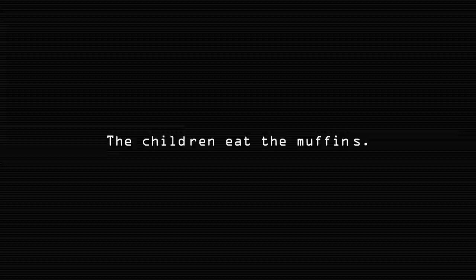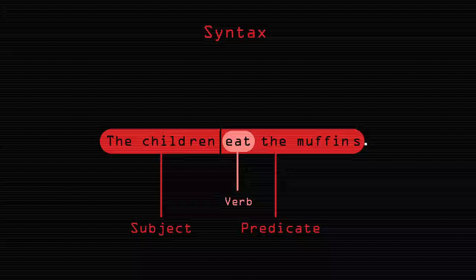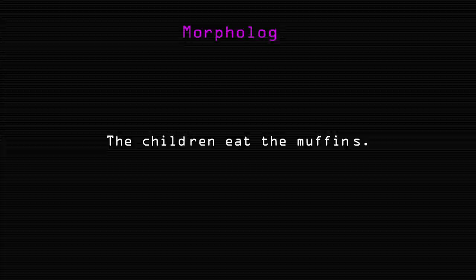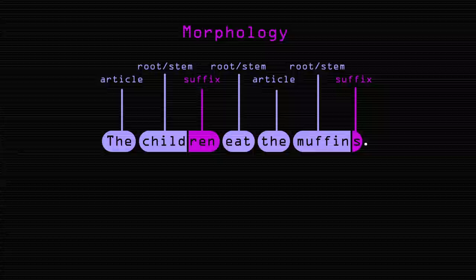For a seemingly simple sentence like "the children eat the muffins," the program first parses its syntax or grammatical structure by identifying the children as the subject and the rest of the sentence as the predicate, consisting of a verb, eat, and a direct object, the muffins. It then needs to recognize English morphology, or how the language can be broken down into its smallest meaningful units, such as the word muffin and the suffix -s, used to indicate plural.